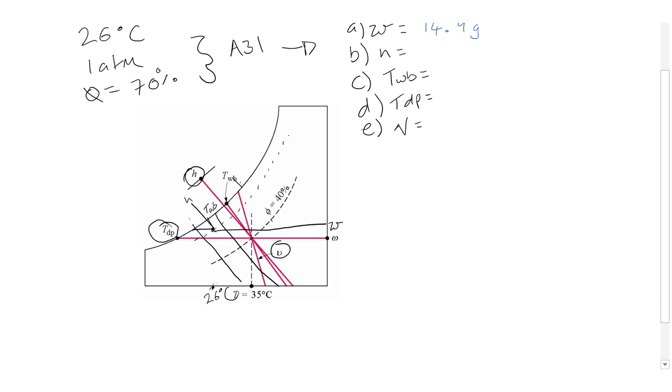14.9 grams H2O. The same technique as we saw using the chart. I'm not going to show it again because you should be familiar with it now. Kilograms, and enthalpy 64, T-wet bulb 22 degrees C.